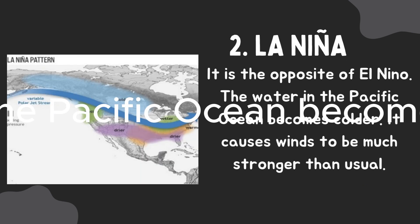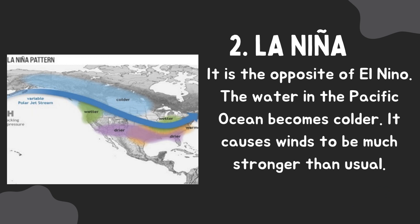Two, La Niña. It is the opposite of El Niño. The water in the Pacific Ocean becomes colder. It causes winds to be much stronger than usual.